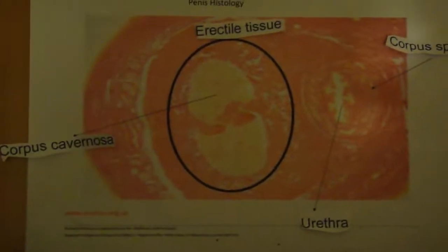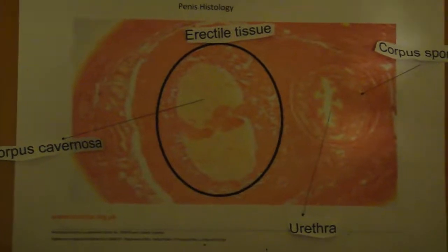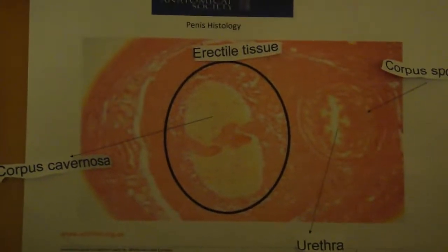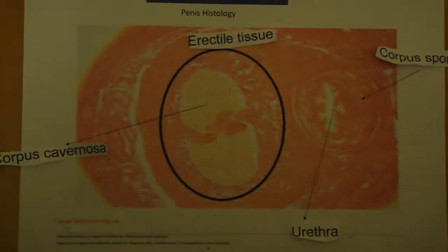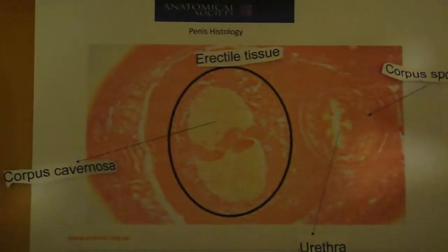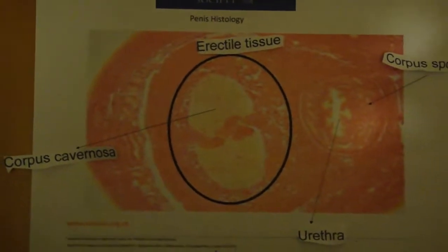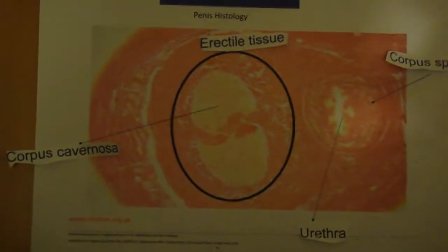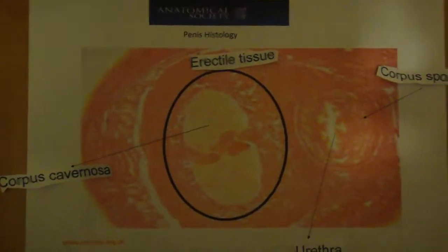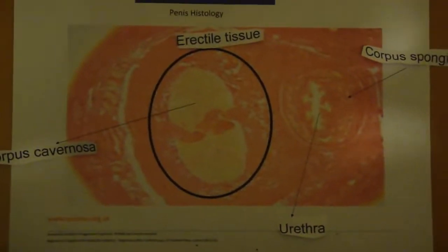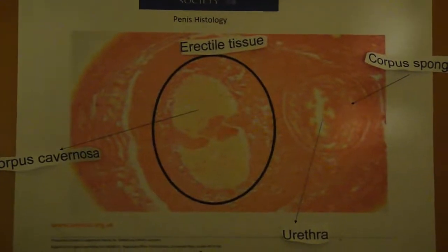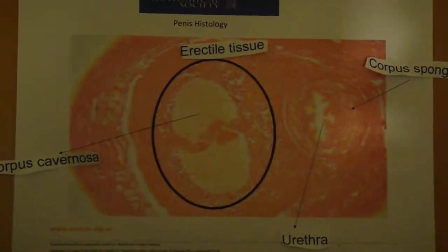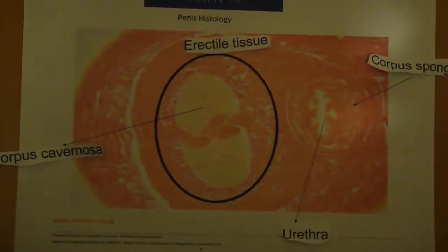Each corpora is surrounded by fibrous tissue, which is continuous with the fibrous sheath. The turgidity of the corpus spongiosum is lower than that of the corpus cavernosum, as the urethra lumen needs to be maintained in order for the passage of semen.